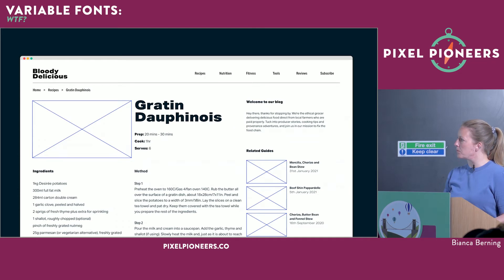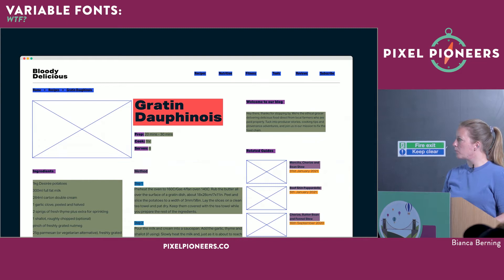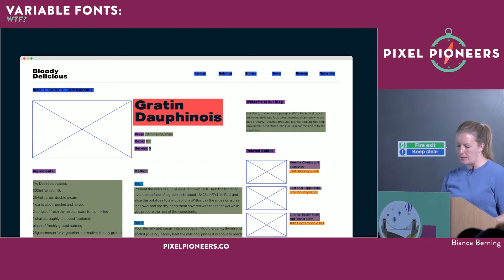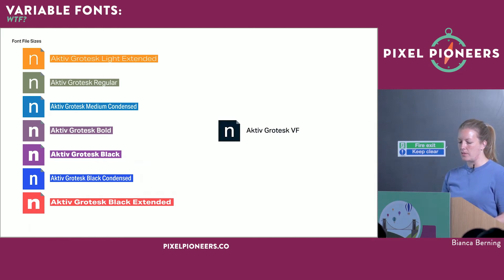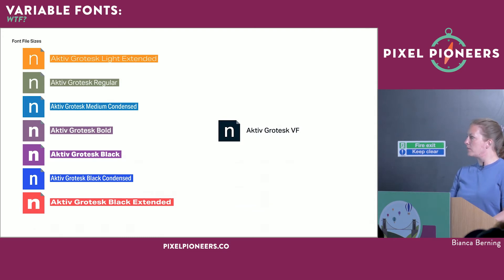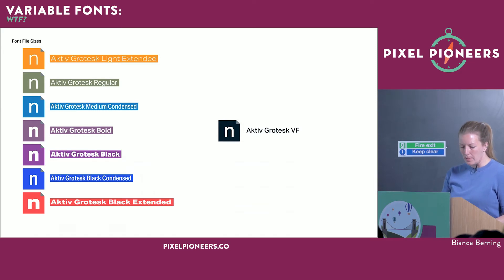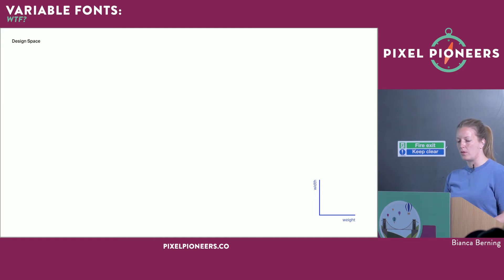I have a regular weight for running text, an expanded black weight for headlines, and a narrow for navigation. Before variable fonts, I would have had to serve many different font files. Instead, we can now serve this in one variable font file. This contains different weights — regular, bold, medium, black — and different widths — extended and narrow — called axes. My recipe website needs a design space with a width axis and a weight axis.